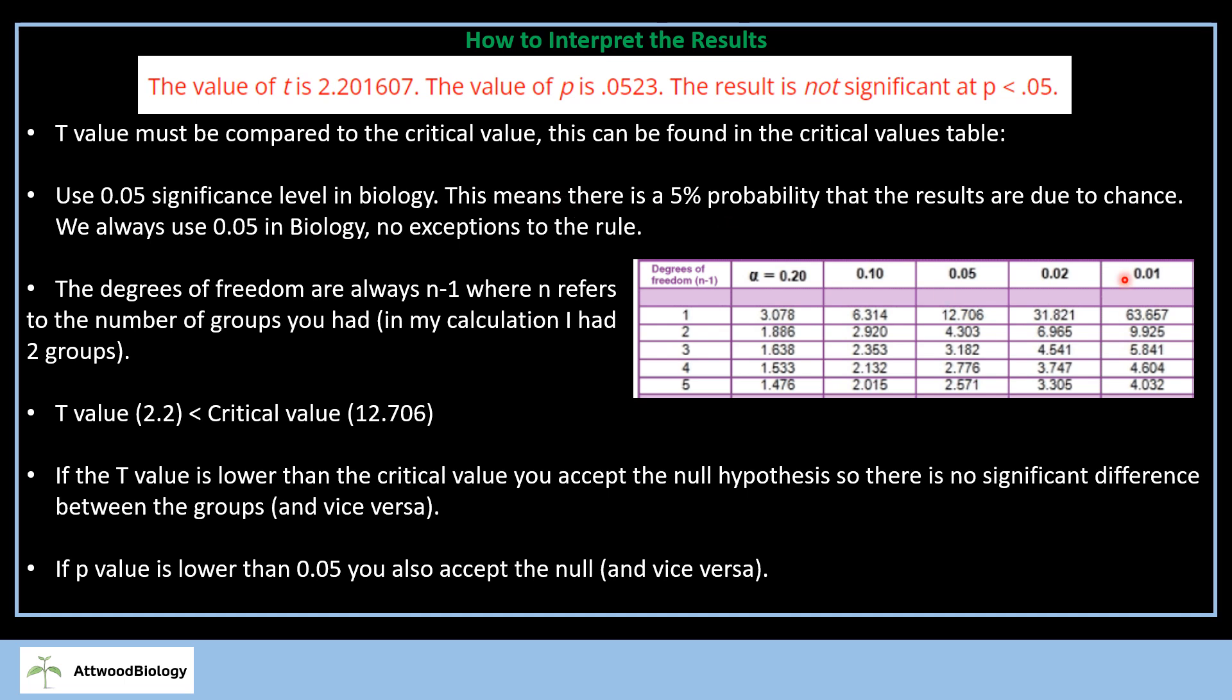The degrees of freedom, you can see 0.05 is here in this column. So we need to work out what degrees of freedom we're going to use. Degrees of freedom is n minus 1, where n refers to the number of groups you had. In my calculation, I had two groups, and I ended with 1. So the critical value is 12.706.